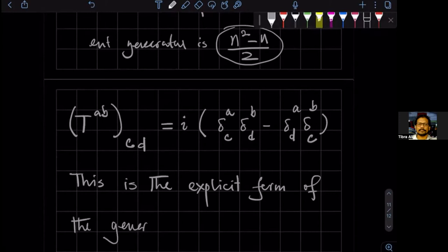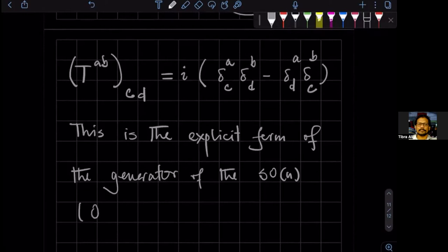So this is the explicit form of the generator of the SO(N) group. There might be a minus sign missing and stuff like that that I don't really care about. Are there any questions?